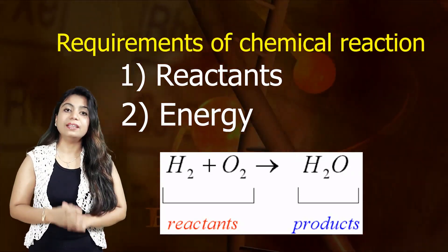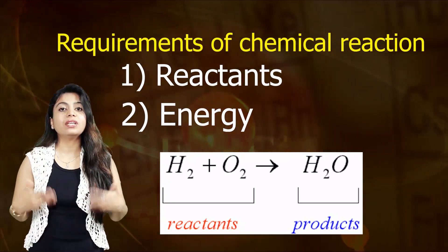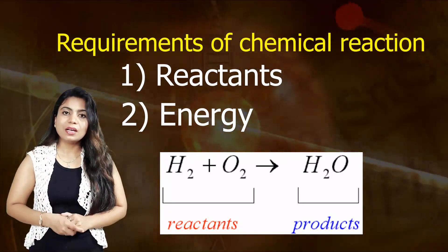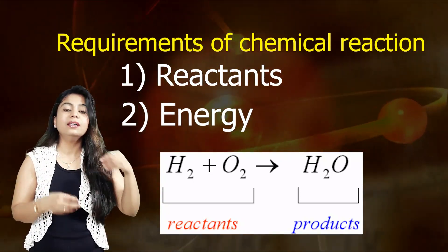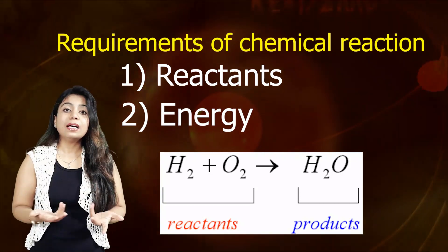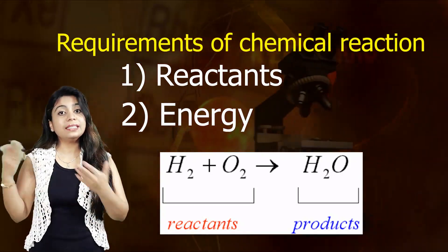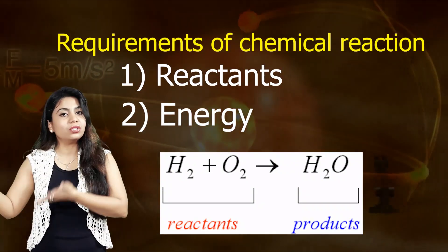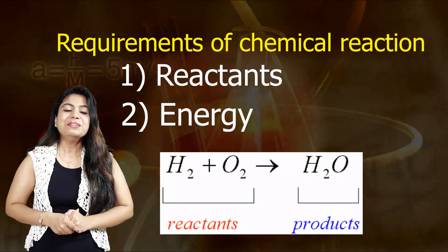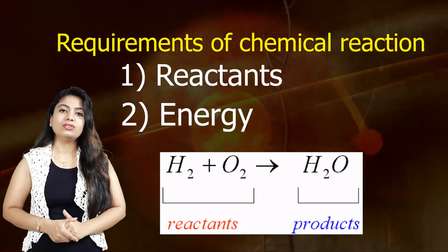The second requirement is energy. Energy is needed to bring about any chemical reaction. For example, to make a cake you take all the reactants — flour, baking soda, water, milk — and when you bake it in the oven, the oven provides the energy. So reactants and energy are both required. We have now discussed the definition, why chemical reactions are useful, and their requirements.